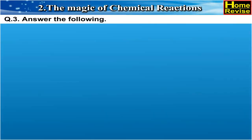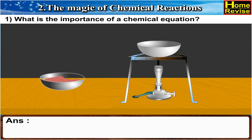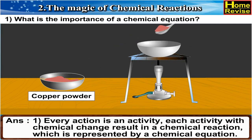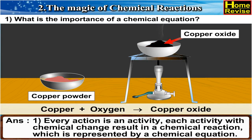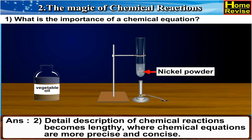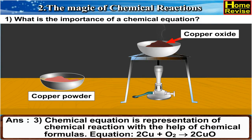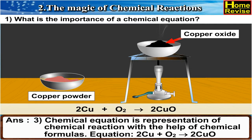Question 3: Answer the following. 1. What is the importance of a chemical equation? Answer: Every action and activity with chemical change results in a chemical reaction, which is represented by a chemical equation. Detailed description of chemical reactions becomes lengthy, whereas chemical equations are more precise and concise. A chemical equation is a representation of a chemical reaction with the help of chemical formulae. For example, 2Cu + O2 gives 2CuO.